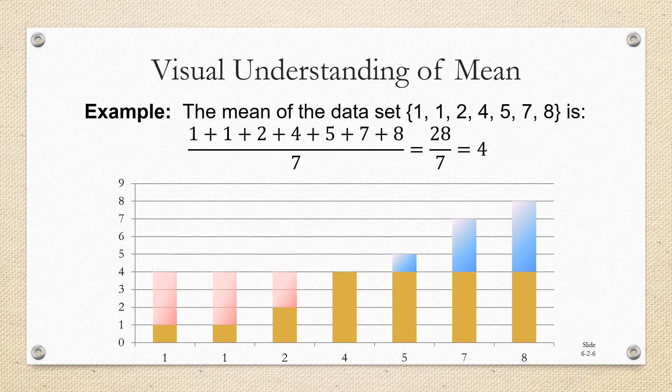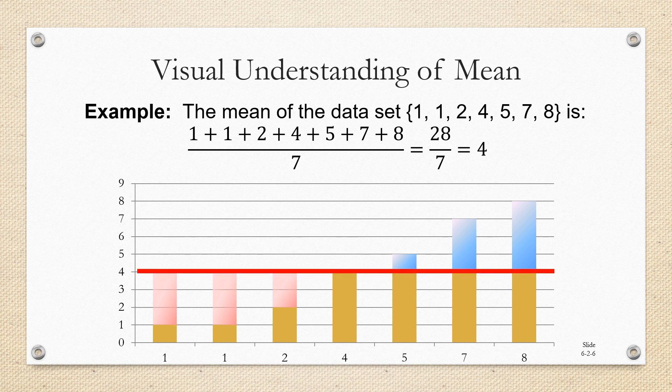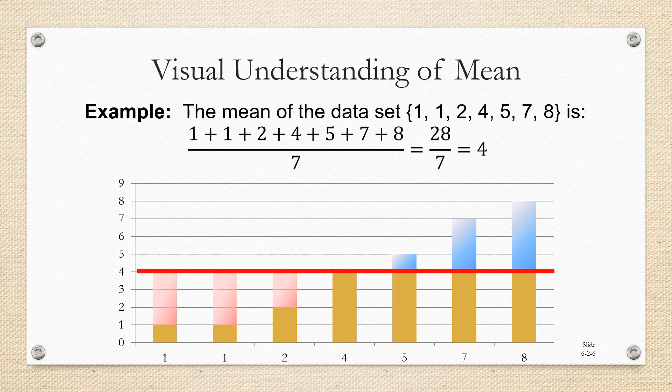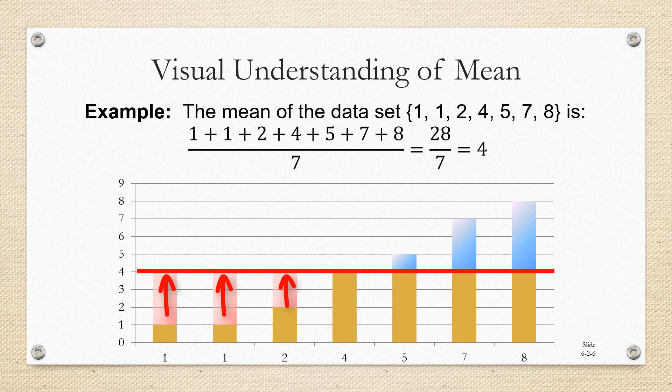If you represent the data values using rectangles that have a height corresponding to each data value and compare it to the mean of 4, what you'll see is that some of the values are below 4, some of them are exactly at 4, and some of them exceed 4. The interesting thing is that the amount that the numbers that are deficient on the left would need to grow in order to reach 4 is actually exactly the same as the amount that the numbers on the right exceed it by.